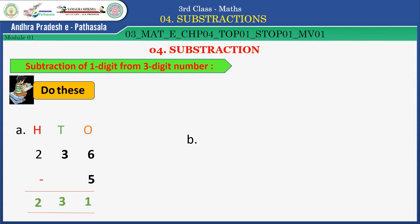Problem B: given number is 327. Ones place number 7. We have to subtract minus 4. Ones place numbers 7 and 4 — subtract 4 from 7, we get 3 in ones place. Tens place number 2 — write 2 in tens place. Hundreds place number 3 — write 3 in hundreds place. The final answer is 323.